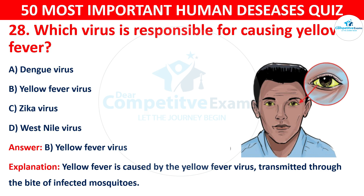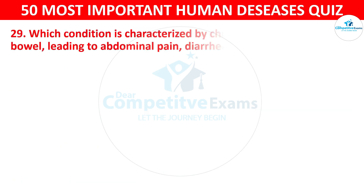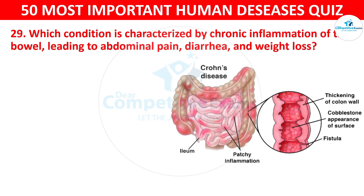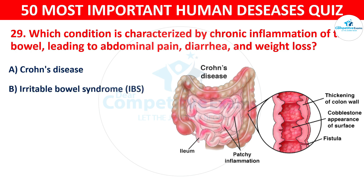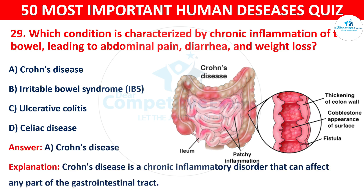Question 29: Which condition is characterized by chronic inflammation of the bowel leading to abdominal pain, diarrhea, and weight loss? Your options are: A) Crohn's disease, B) Irritable bowel syndrome (IBS), C) Ulcerative colitis, or D) Celiac disease. The correct answer is A — Crohn's disease. Crohn's disease is a chronic inflammatory disorder that can affect any part of the gastrointestinal tract.